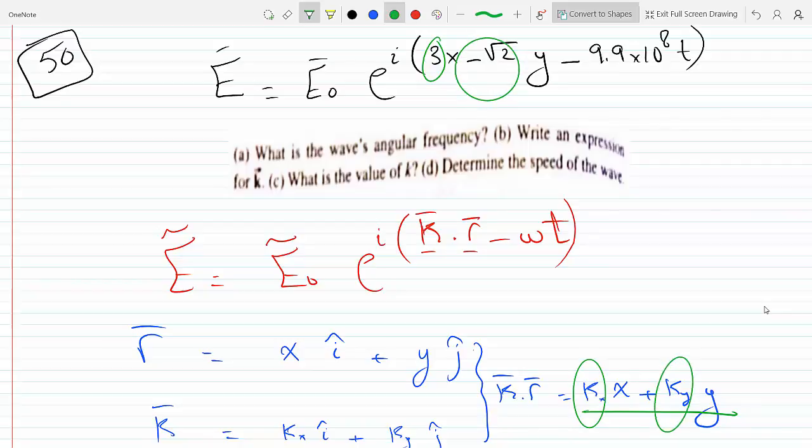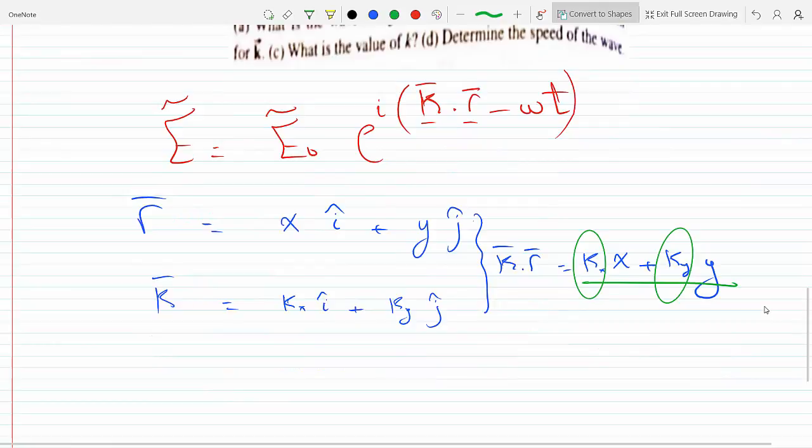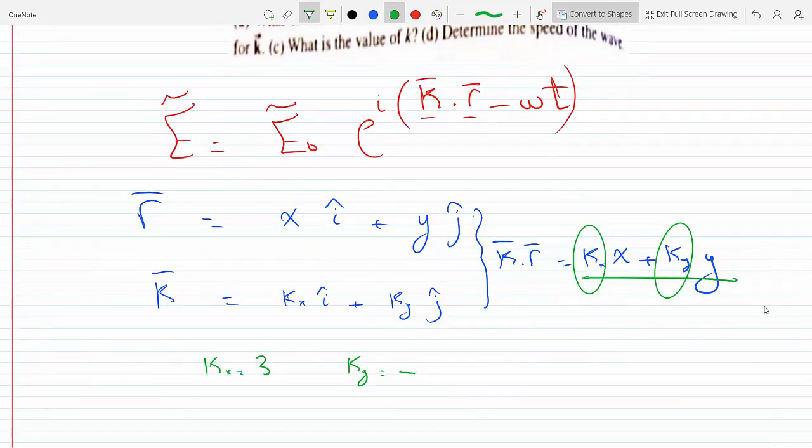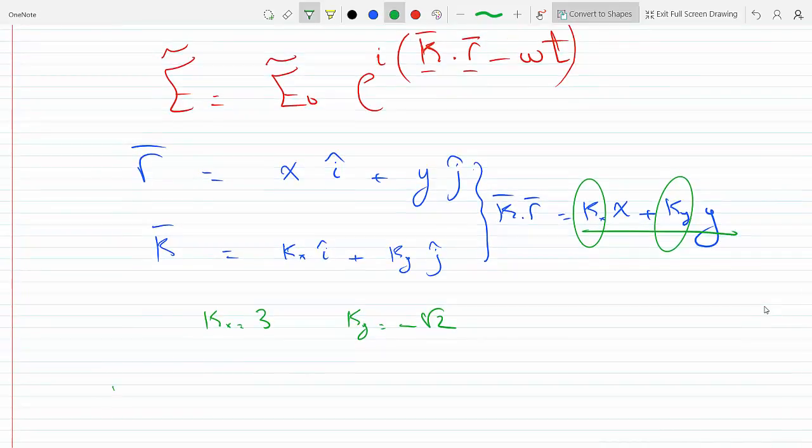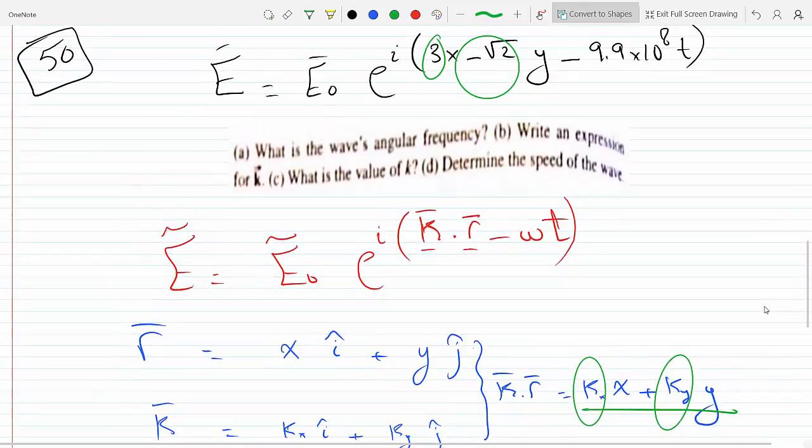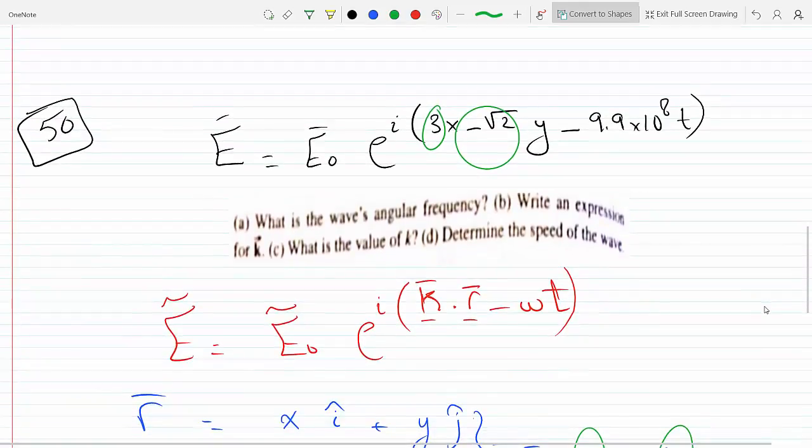If you compare this to this, you can see that the three has to be the Kx and the minus root 2 has to be the Ky. So Kx is 3 and Ky is minus root 2, and thus your K vector will be 3i minus root 2j. It's the wave number.